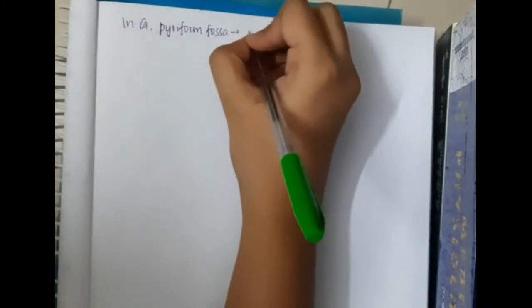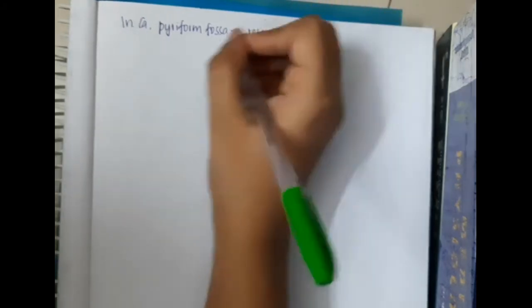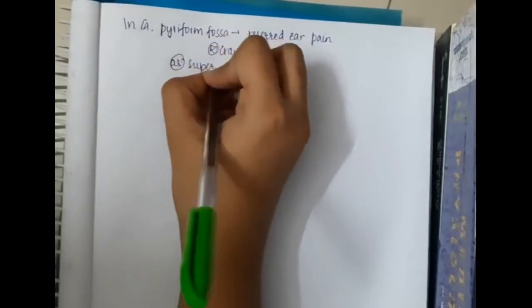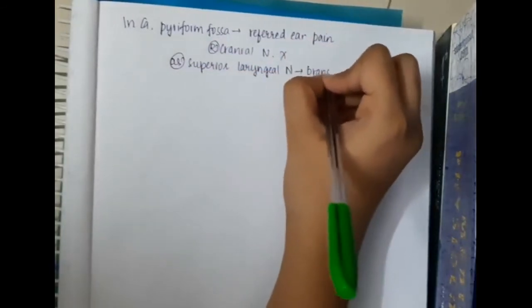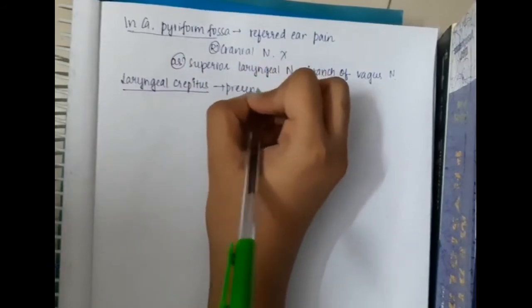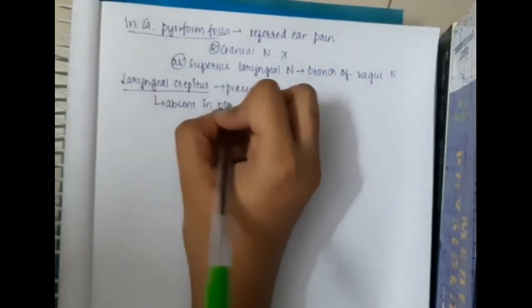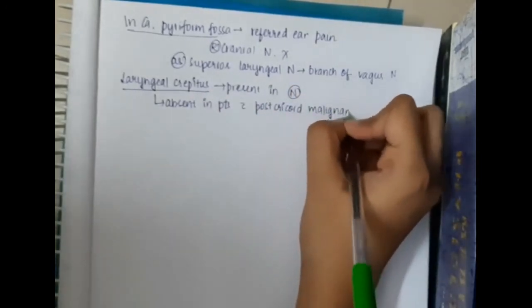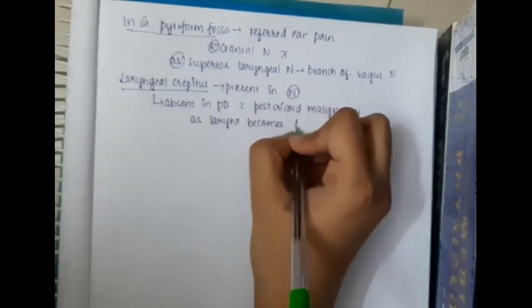All these are the etiological factors of carcinoma hypopharynx. In carcinoma pyriform fossa, referred ear pain is seen because of cranial nerve tensile with cranial nerve involvement. As there can be superior laryngeal nerve, if there is superior laryngeal nerve involvement, then this can cause hoarseness of voice. Then laryngeal crepitus may also be present in normal cases, but this laryngeal crepitus is absent in patients with post-cricoid malignancy as the larynx becomes fixed.